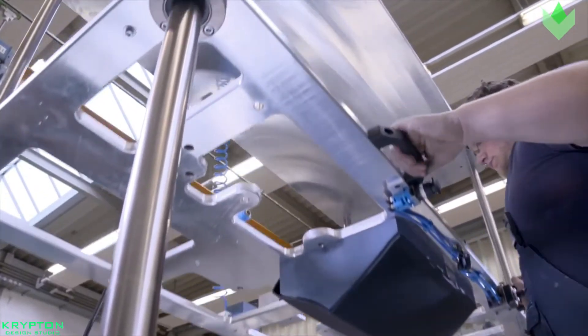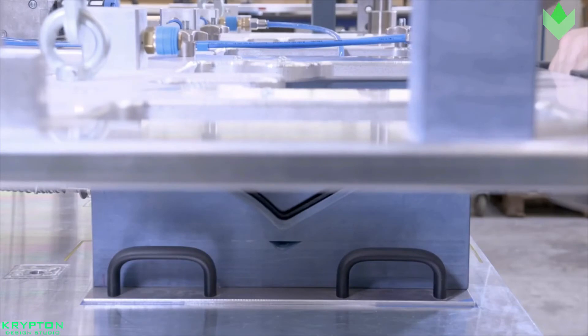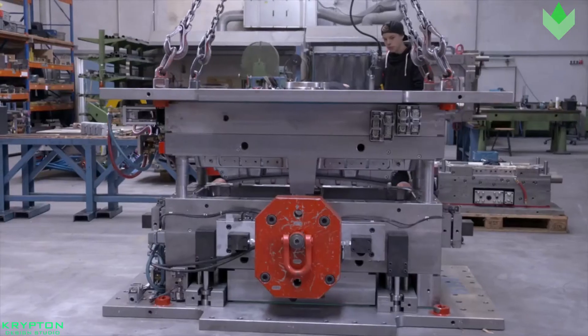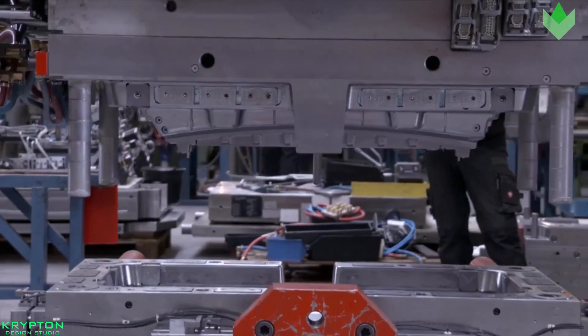Beryllium copper is used in areas of the mold which require fast heat removal or areas that see more shear heat generated.